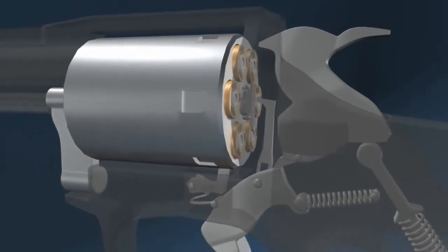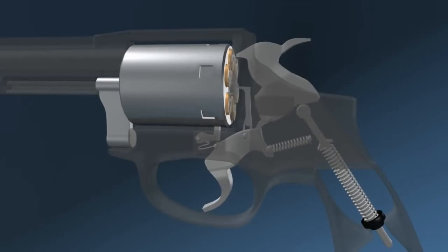When the trigger lever is pushed all the way back, it releases the hammer. The compressed spring drives the hammer forward.